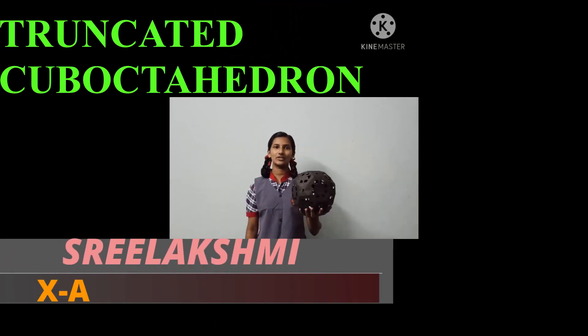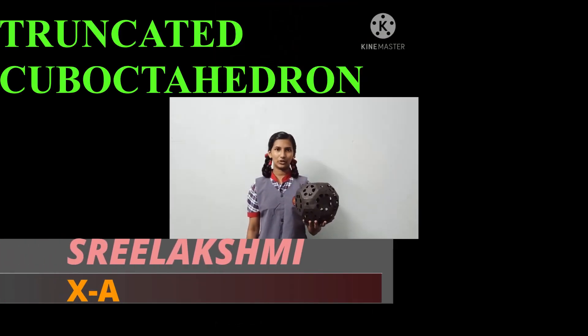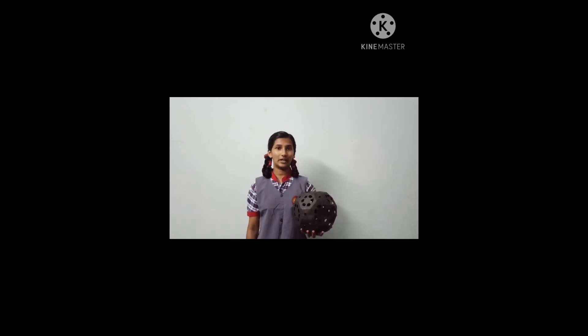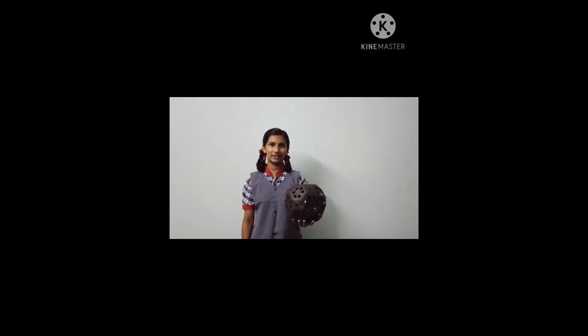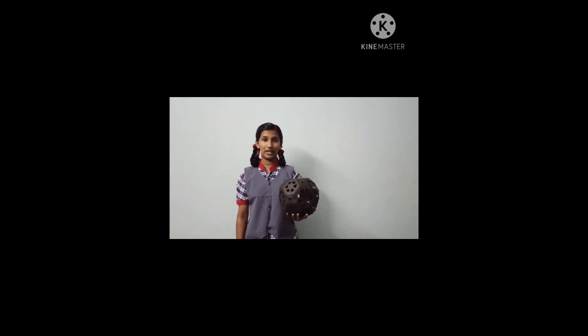This is truncated cuboctahedron. Truncated cuboctahedron is an Archimedean solid named by Kepler as a truncation of the cuboctahedron. It has twelve square faces, eight hexagonal faces and six octagonal faces. It also has forty-eight vertices and seventy-two edges.